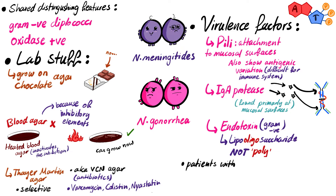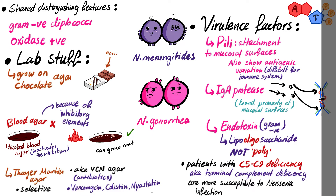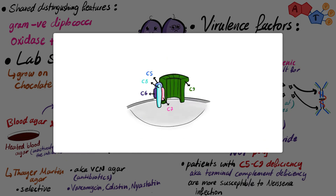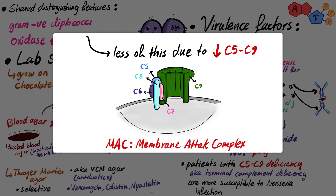Patients with C5 to C9 deficiency, also known as terminal complement deficiency, are more susceptible to Neisseria infection, because these complement proteins are essential to form the MAC — the membrane attack complex — used to cause bacterial lysis. When these proteins are deficient, the MAC won't be produced adequately, making patients more prone to infection.